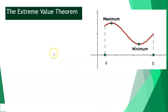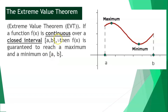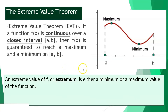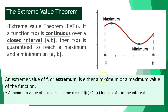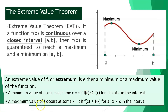The extreme value theorem states that if a function is continuous over a closed interval from a to b, then f of x is guaranteed to reach a maximum and a minimum on a, b. The extreme value of f, or extremum, is either a minimum or a maximum value of a function. A minimum value occurs if f of c is less than or equal to f of x, while a maximum value occurs if f of c is greater than or equal to f of x.